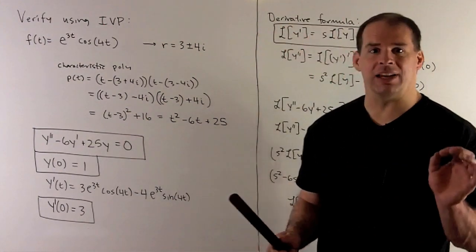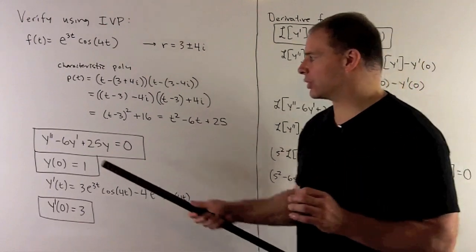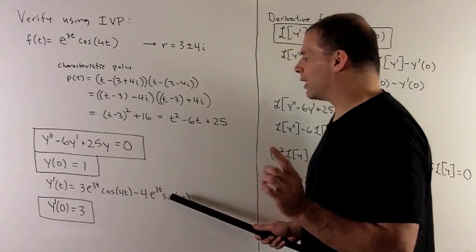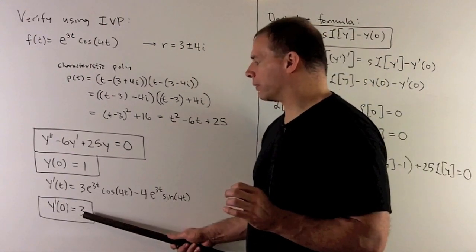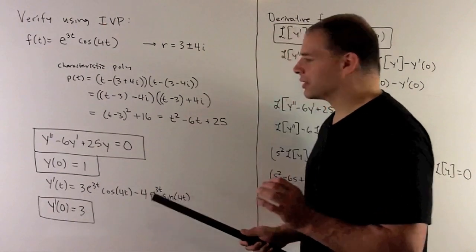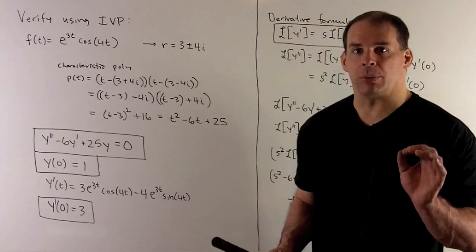We need the first derivative since this is an order 2 ODE. We take its derivative, evaluate at 0, and we have y'(0) equals 3. What's in the boxes is our initial value problem.